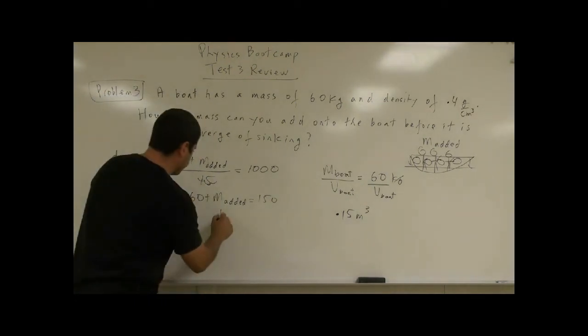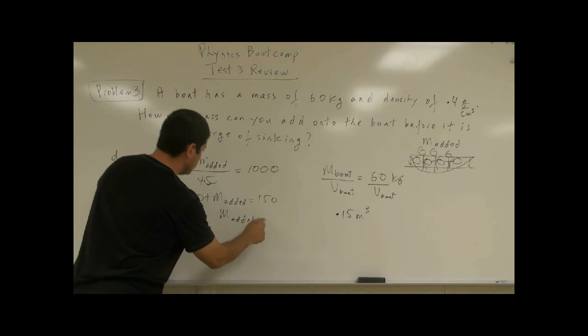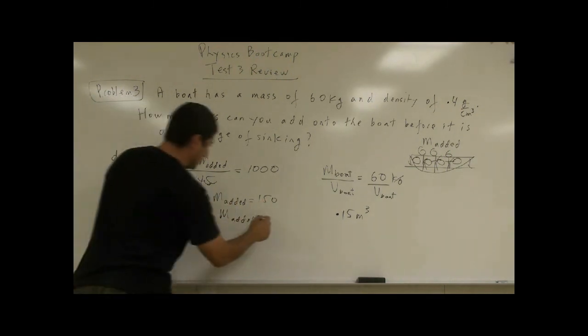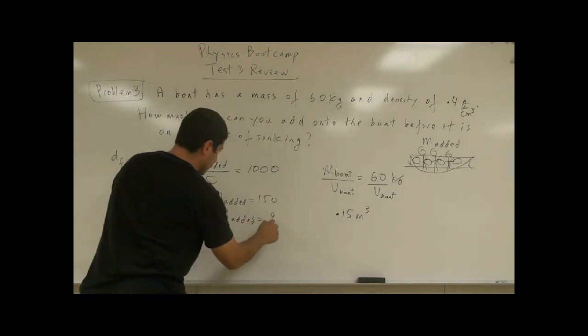And therefore, the added mass is equal to what? 150 divided by 60, I mean minus 60, that's 90 kilograms.